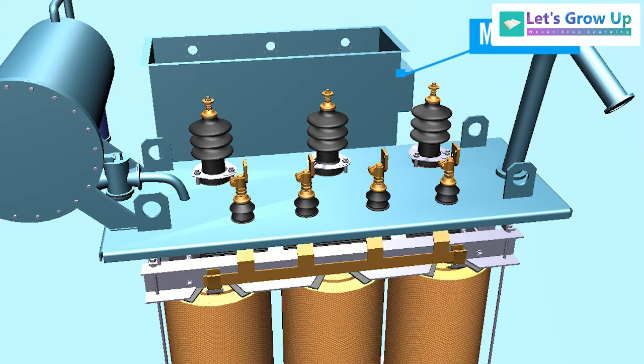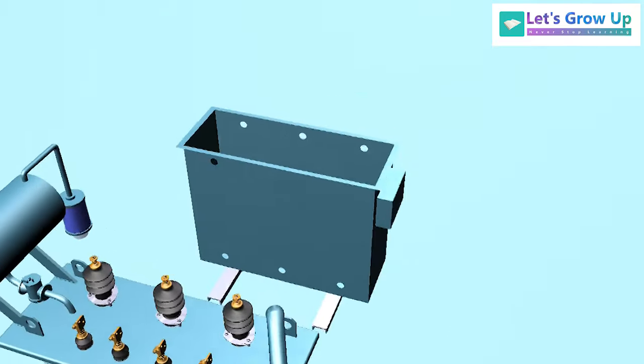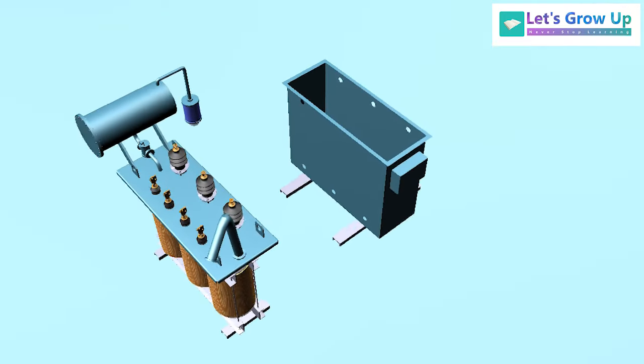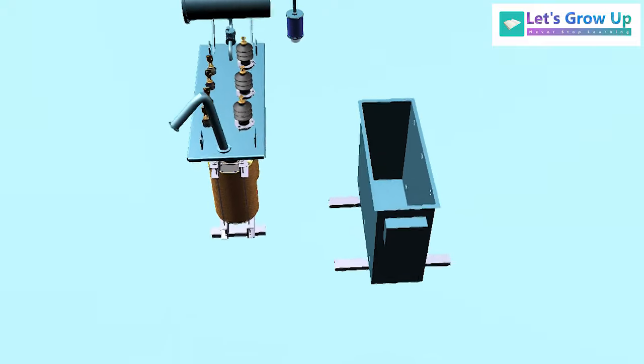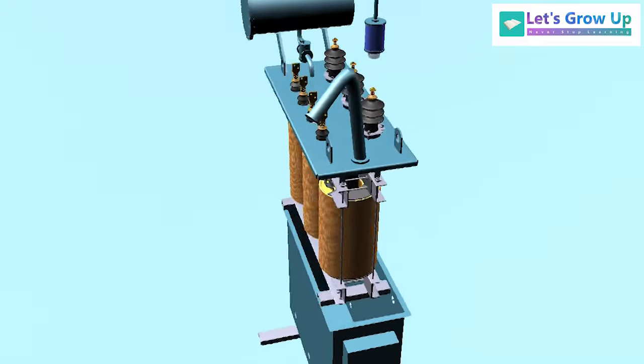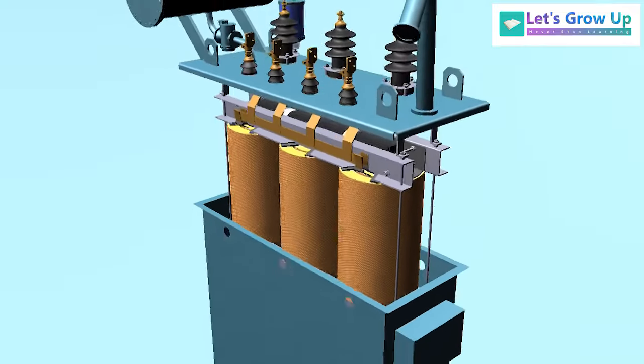Main tank: It is a steel box. Transformer core is placed inside this tank. Windings and other helpful devices are placed inside this tank. It is filled with insulating oil mineral oil.